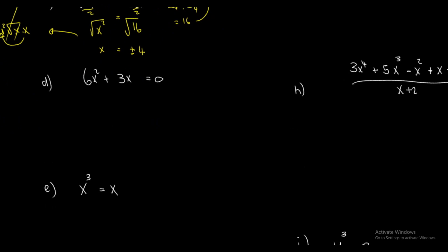Let's go to the next question. The first thing I want to do is factorize. I can see both terms contain a 3 — 6 has factors of 3 and 2, so I can take out a 3. Both also contain an X, so I can take out 3X. If I divide 3X from 6X squared I'm left with 2X, and for the 3X term I'm left with 1, giving 3X(2X + 1) = 0. Now I have to do two separate calculations. The first: anything divided by 0 is 0, so 3X is equal to 0, and dividing both sides by 3 gives X is equal to 0.